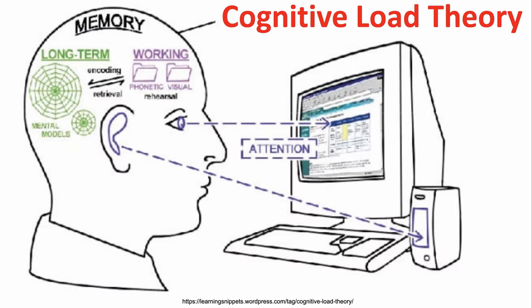Cognitive load theory helps describe why sketchnoting may work so well. Working memory is finite. If you overload your working memory before there's time to encode and transfer it into long-term storage into mental models, things will be forgotten. If you're asked to remember a series of numbers, you can figure out how big your short-term working memory is by how quickly the first numbers drop off and you can't remember them.